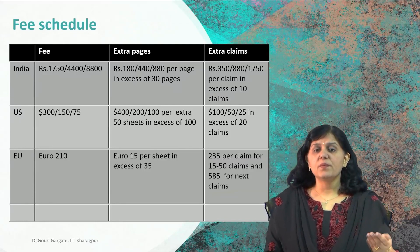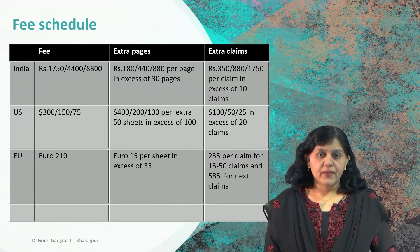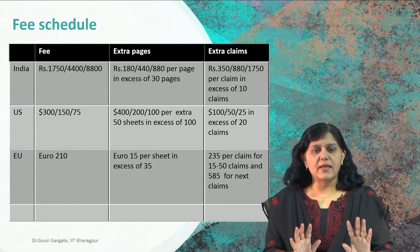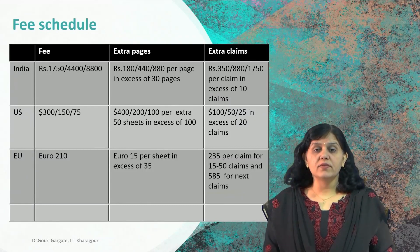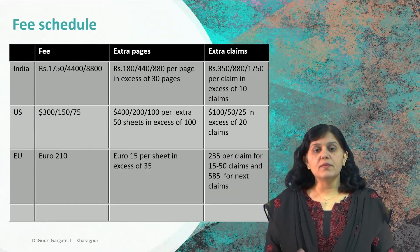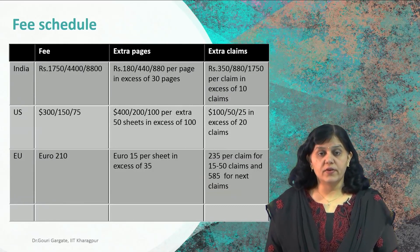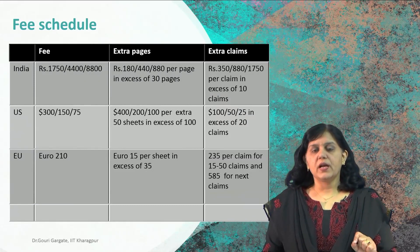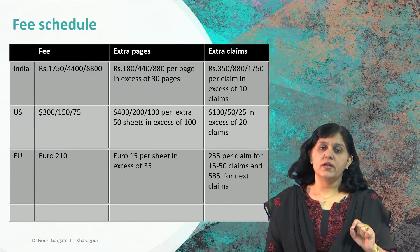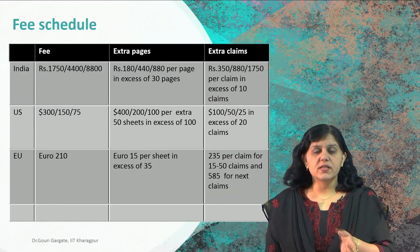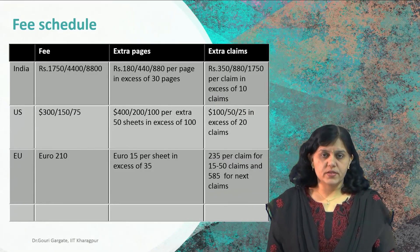Is there a page limit when filing a patent? Yes. In India, the limit is that your patent document should have a maximum of 30 pages. If your invention cannot be described in 30 pages and the number of pages increases, you have to give an extra fee. If you are an individual, you give 180 rupees per extra page or sheet; if you are a small entity, 440 rupees per page; and if you are a big organization or MNC, 880 rupees per page — beyond that 30-page limit, starting from page 31.